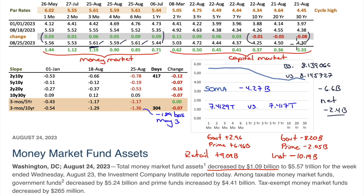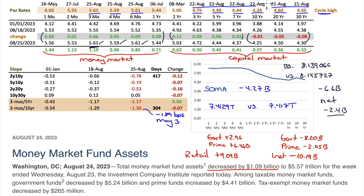Week over week, the long end of the curve — 10s, 20s, 30s — dropped, while the front end from the 2 to the 7 increased. But that hides last week's volatility: Monday was an ugly day for bonds, Tuesday was a beautiful day. On Friday the 3-month, 4-month, and 6-month all hit cycle highs. Earlier in the week, the 3, 5, 7, 10, 20, and 30-year all hit cycle highs — the 20 and 30 on Monday, and the 3-to-10s on Tuesday on a closing basis.